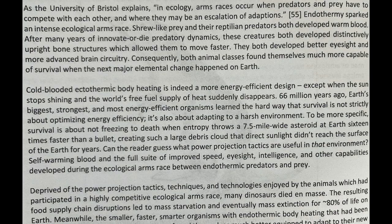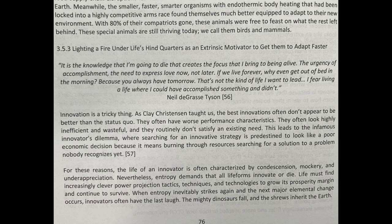The resultant food supply chain disruptions led to mass starvation and eventually mass extinction for approximately 80% of life on Earth. Meanwhile, the smaller, faster, smarter organisms with endothermic body heating that had been locked into a highly competitive arms race found themselves much better equipped to adapt to their new environment. With 80% of their compatriots gone, these animals were free to feast on what the rest left behind. These special animals are still thriving today. We call them birds and mammals.